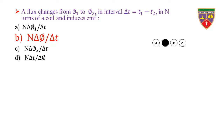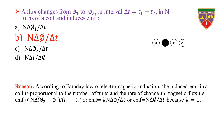Reason: According to Faraday's law of electromagnetic induction, the induced EMF in a coil is proportional to the number of turns and the rate of change in magnetic flux. That is, EMF ∝ N × (Φ₂ − Φ₁)/(t₁ − t₂), or EMF = k × N × ΔΦ/Δt. Since k = 1, the induced EMF in the coil is NΔΦ/Δt.